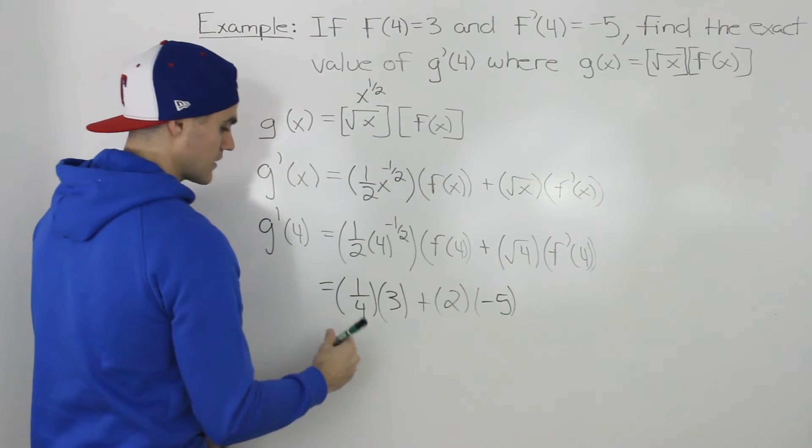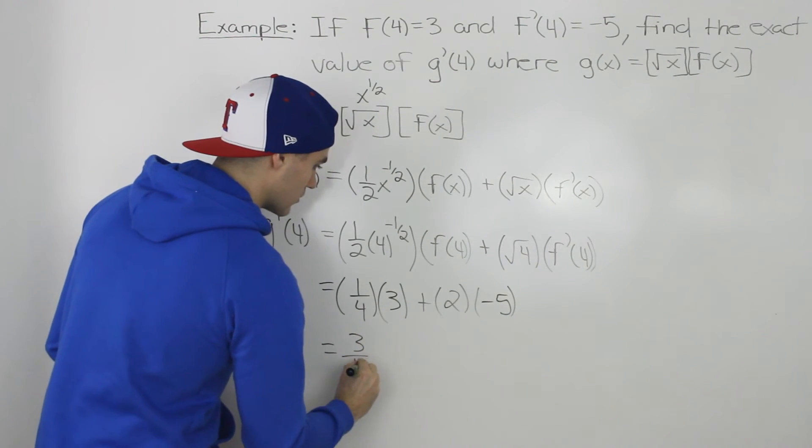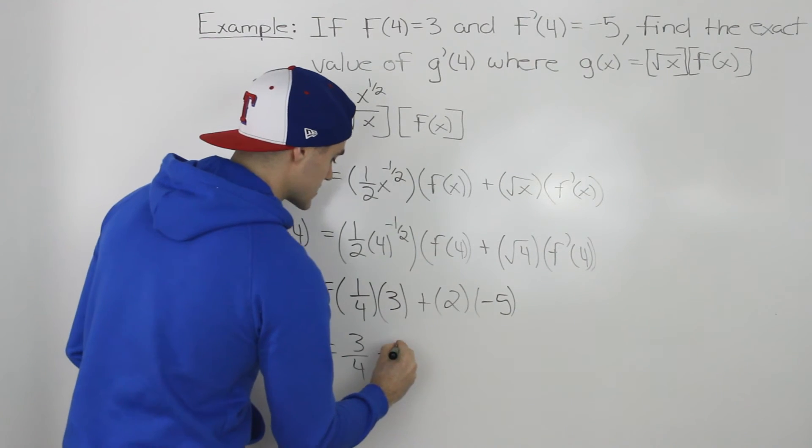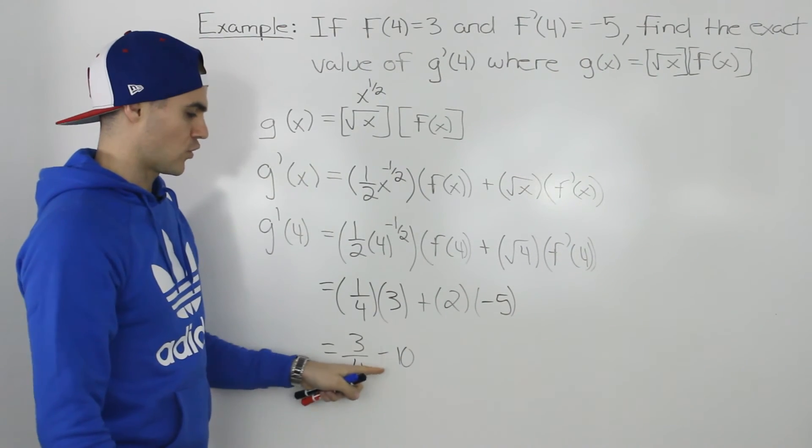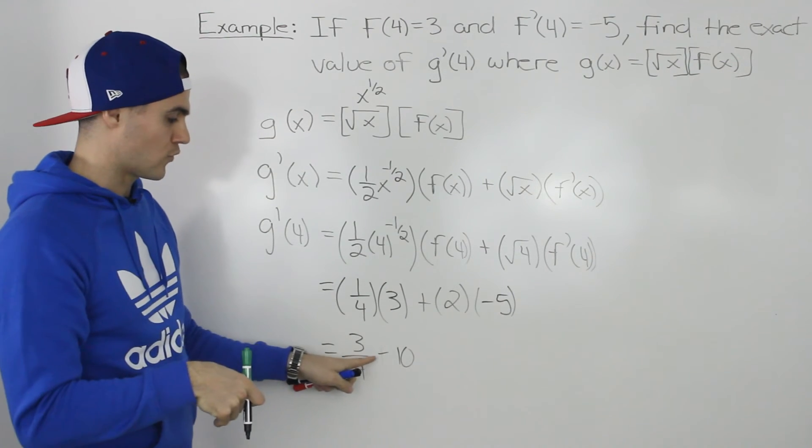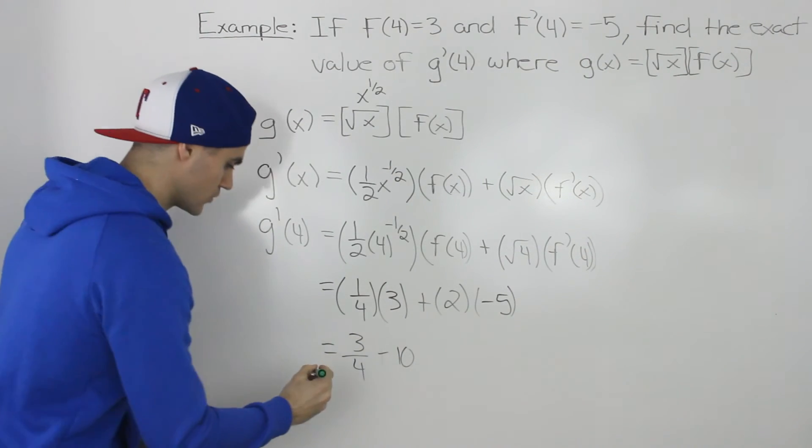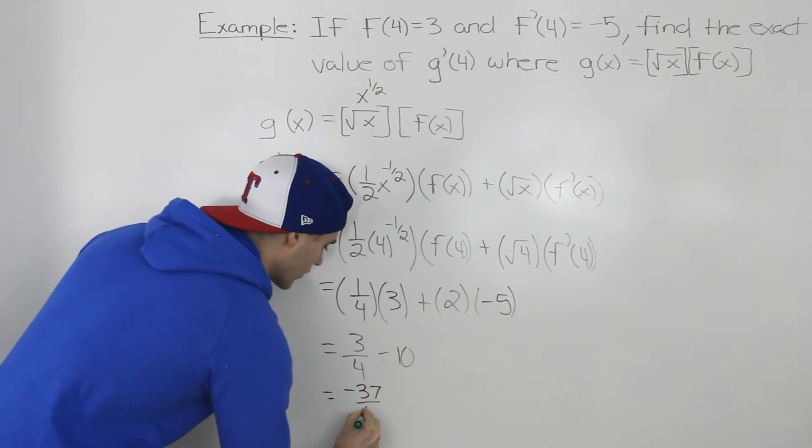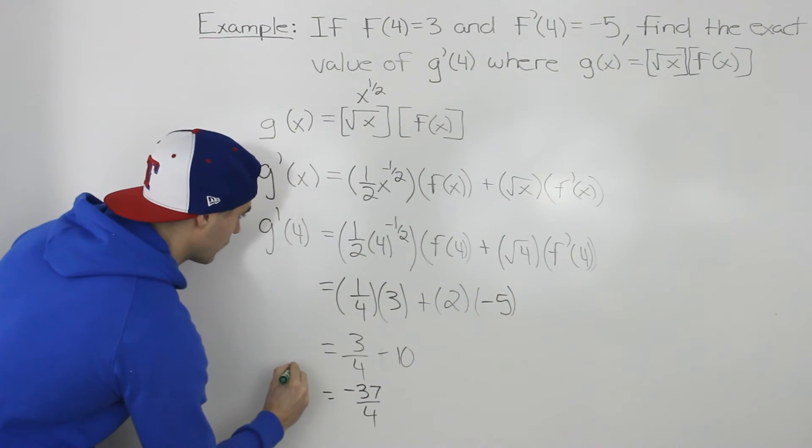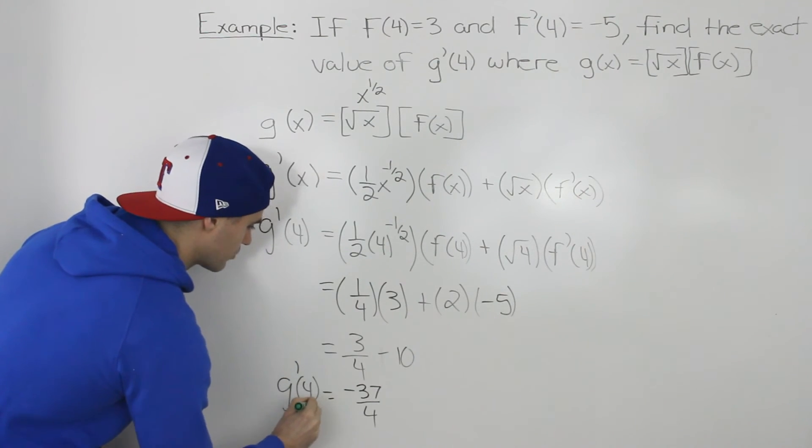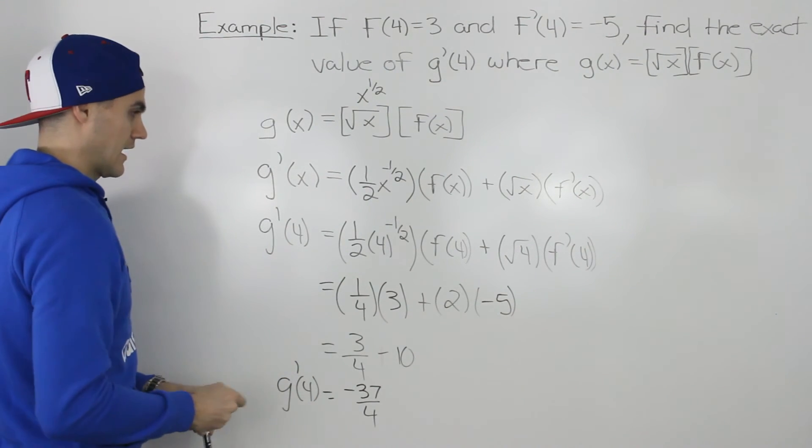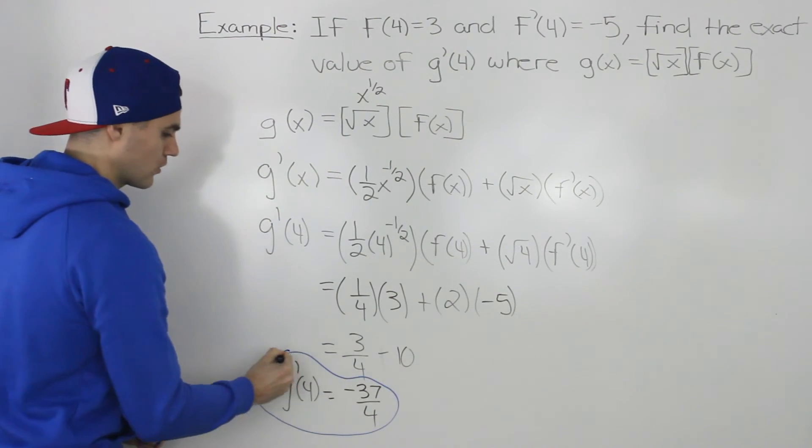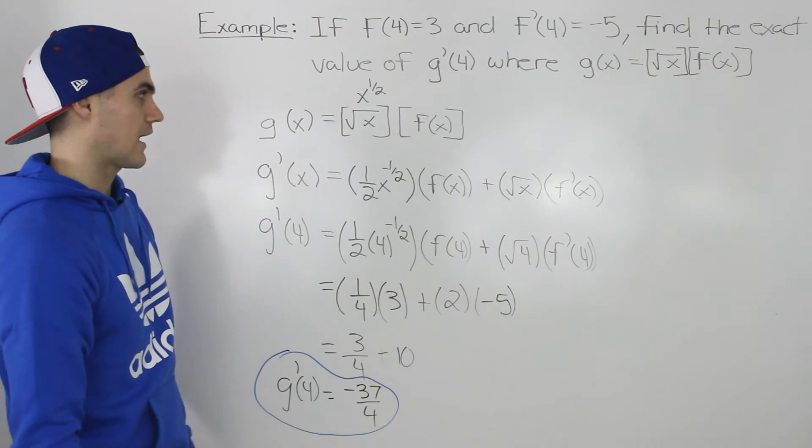So then 3 times 1/4 is 3/4. 2 times -5 would give us -10. And then 3/4 minus 10, if we get a common denominator, we'd have 3/4 minus 40/4, which would give us -37/4. So -37/4 is the final answer for g'(4), and that's what we were looking for. So -37/4 is our final answer.